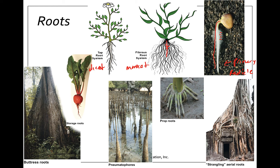There are many specialized root types that break these two molds. Prop roots are adventitious, meaning they emerge from the stem. Part of these prop roots can be above the soil, and they help support tall, top-heavy plants. Another common function of roots is storage — seen in things like radishes, carrots, sweet potatoes, and turnips.